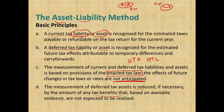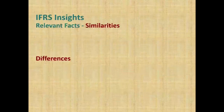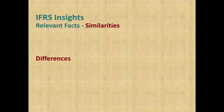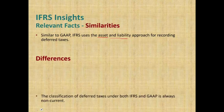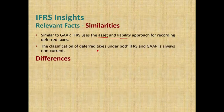Now let's look at differences and similarities between GAAP and IFRS. Similarities: similar to GAAP, IFRS uses the asset-liability approach for recording deferred taxes. Also, under both standards, the classification of deferred tax assets and liabilities is always non-current — there is no current classification. In fact, IFRS adopted the non-current classification before GAAP, but now both standards use this method.